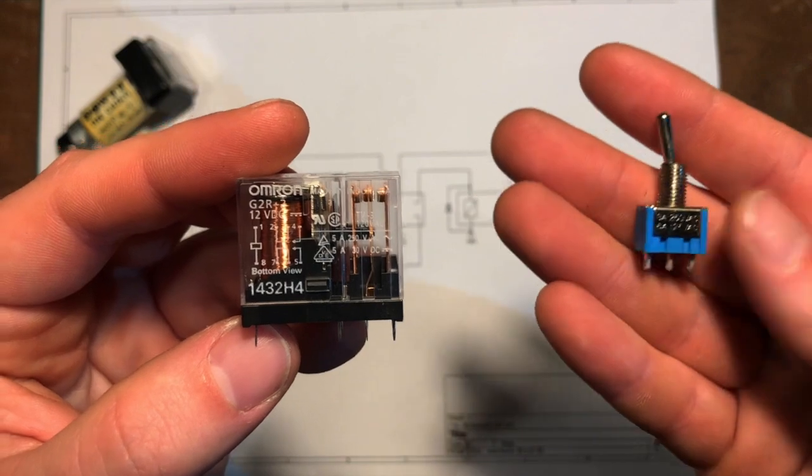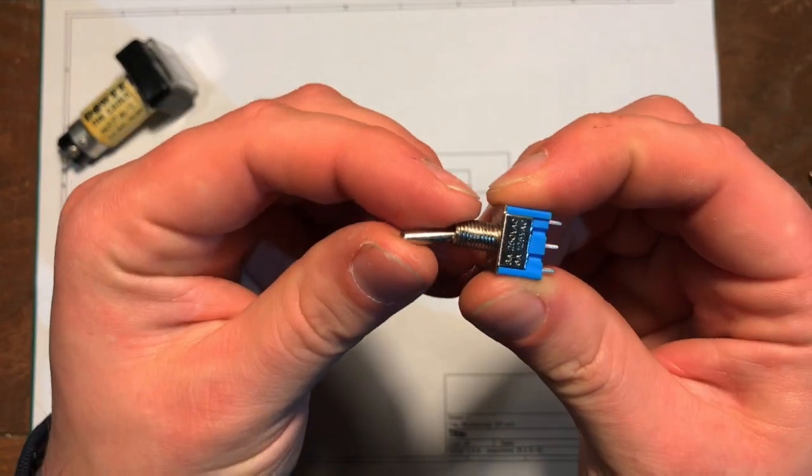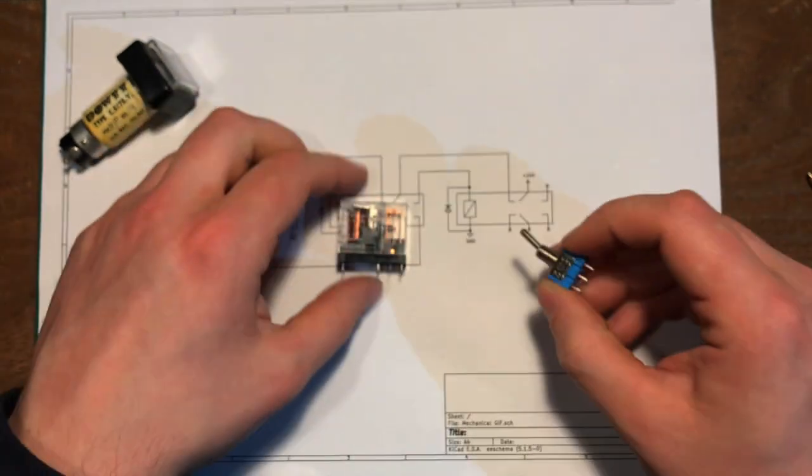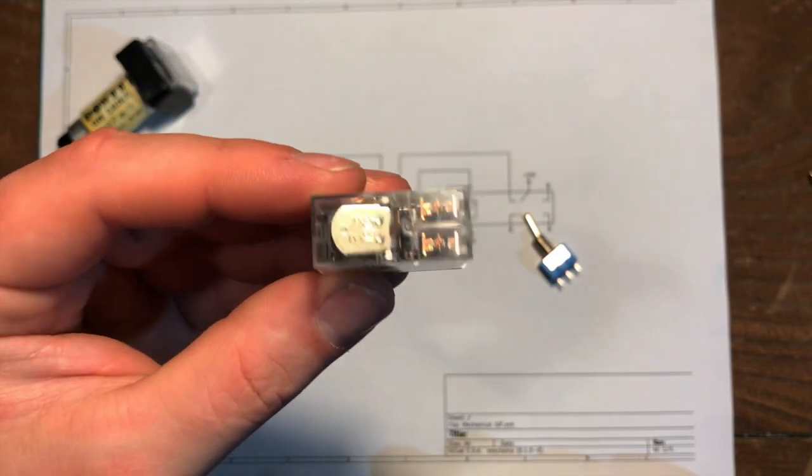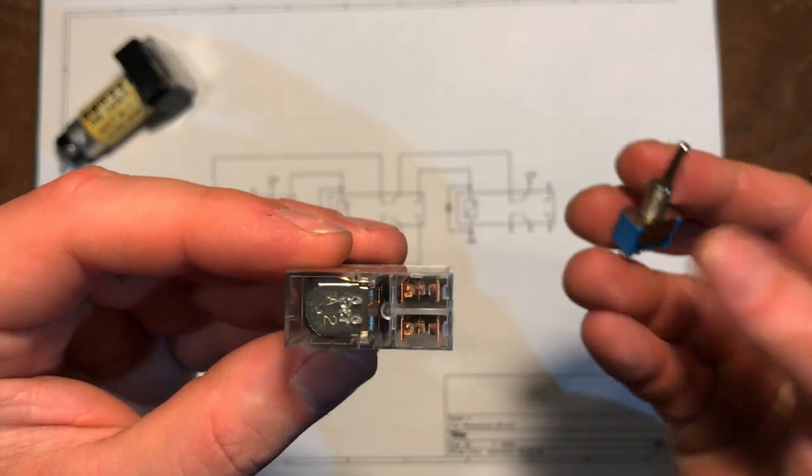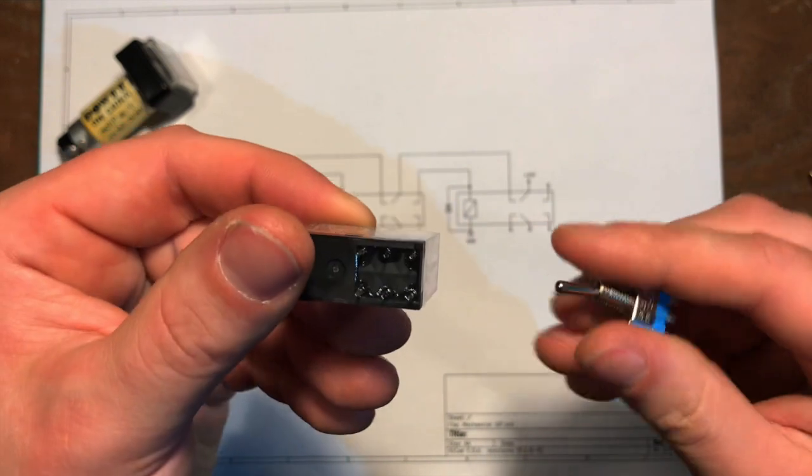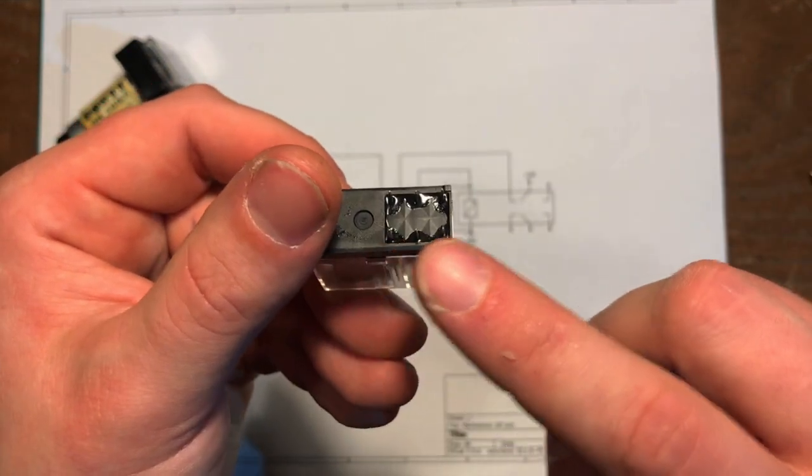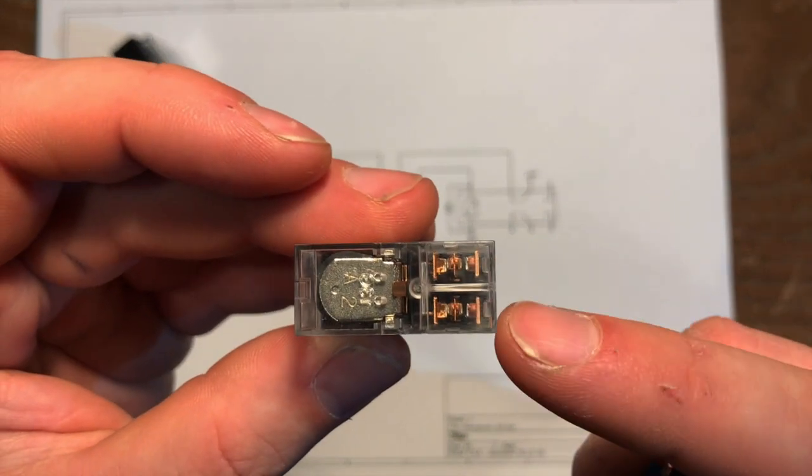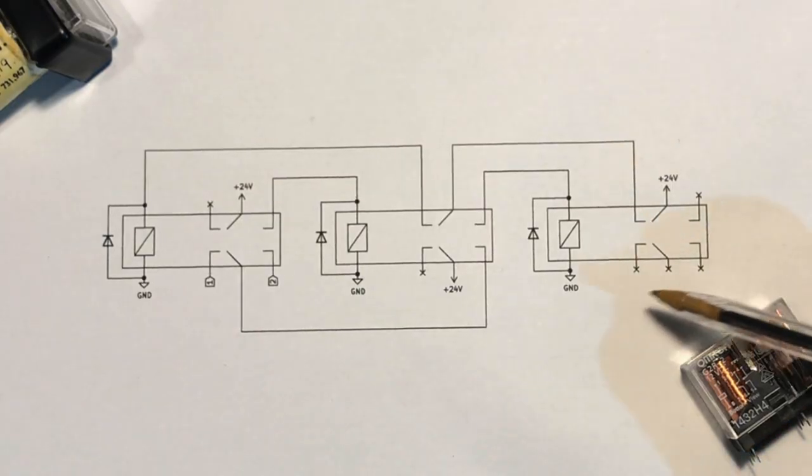The double throw switch is electrically identical to this toggle switch here except that it's not actuated by you with your hands, it's actuated by passing a current through the coil. And this type of relay has a double pole which means it's got effectively two of these double throw switches inside it. You can see there's three pins on this side, three pins on this side, and that's for the two poles, two sets of contacts.